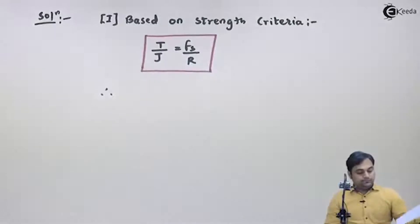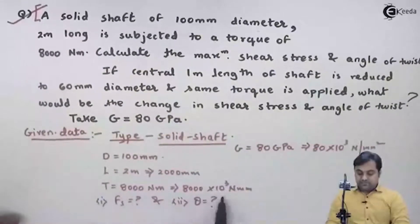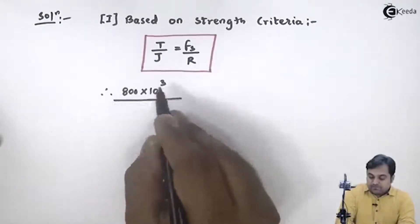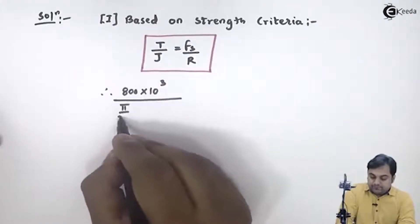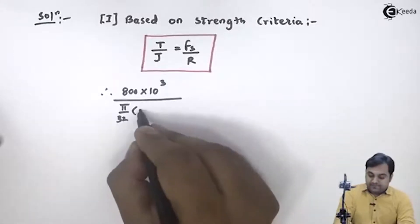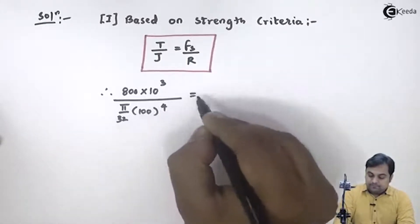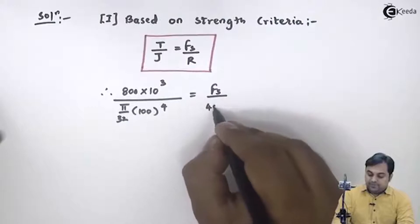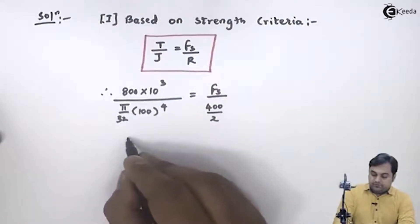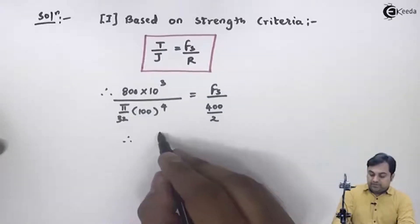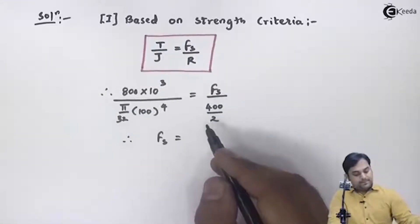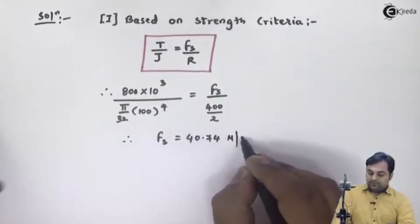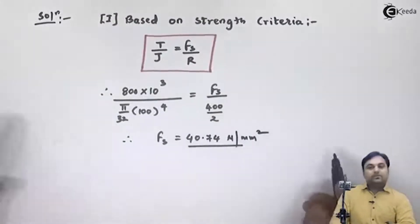The formula is T/J = Fs/R. Therefore, torque is 8000 × 10³ N·mm. The value of J = π/32 × D⁴, where diameter is 100 mm. Fs/R where R = D/2 = 100/2 = 50 mm. From this, calculating the shear stress value gives Fs = 40.74 N/mm². This is the first answer.